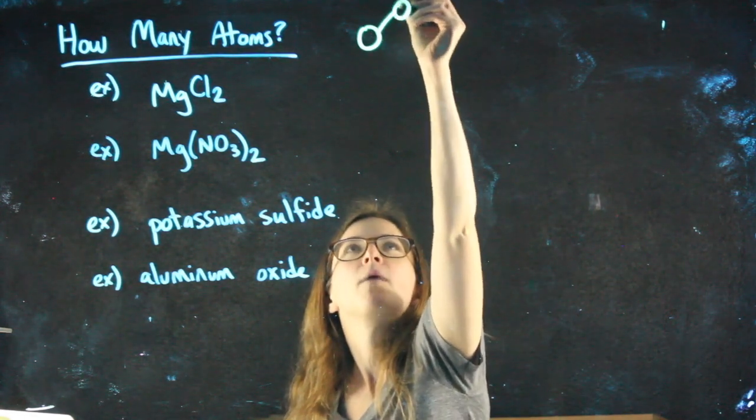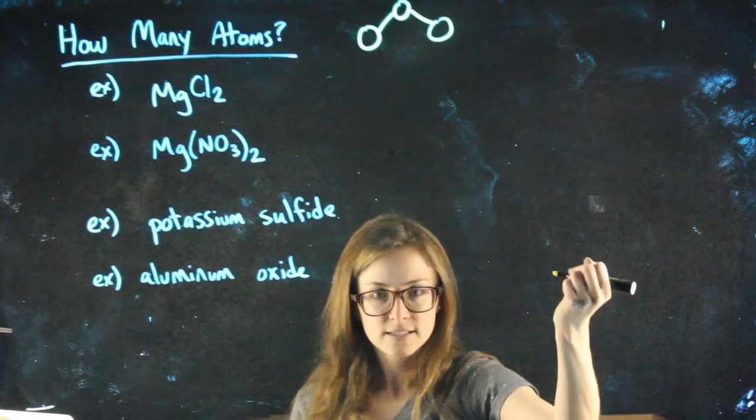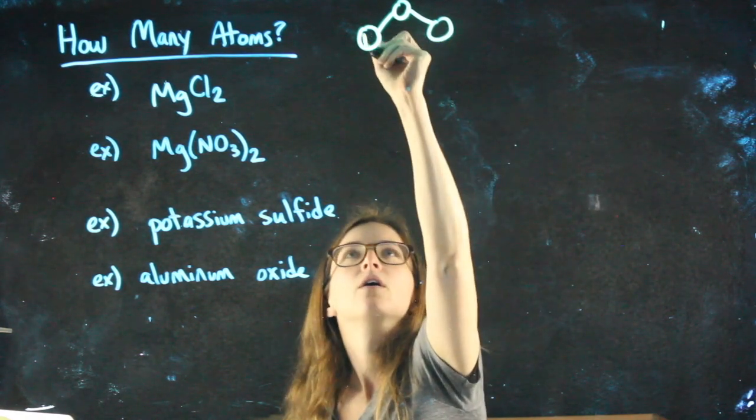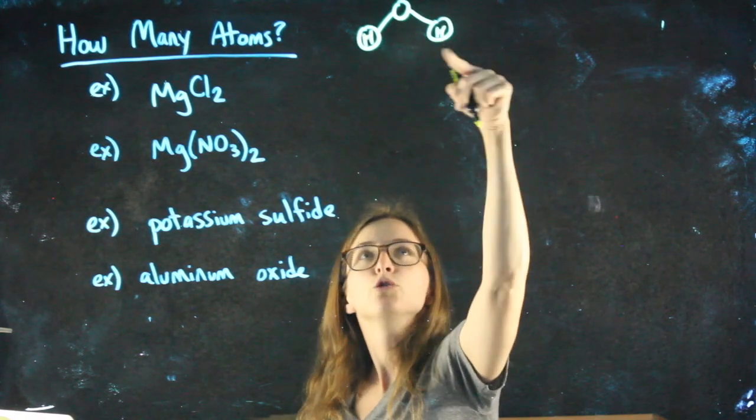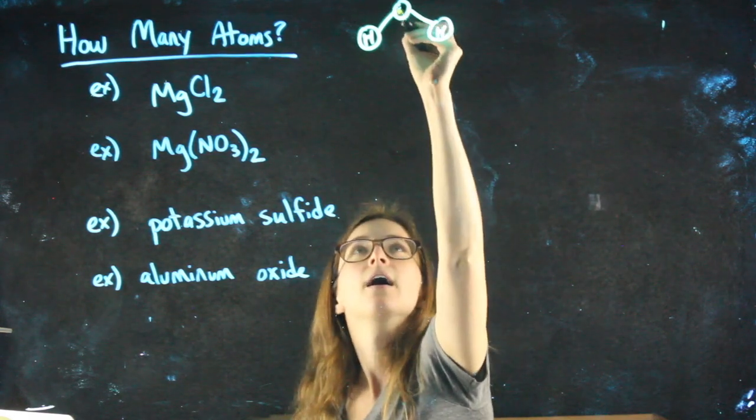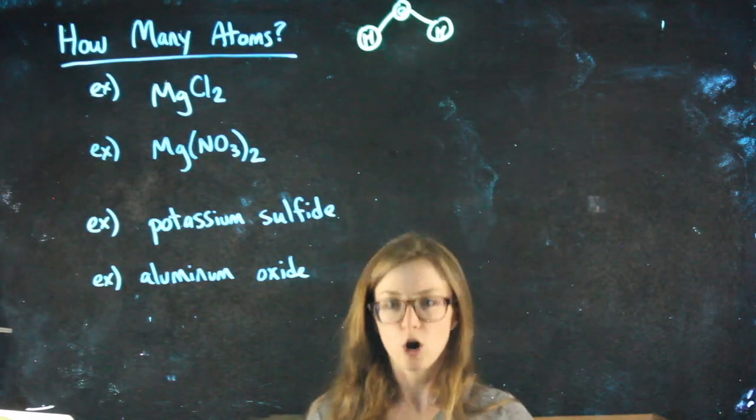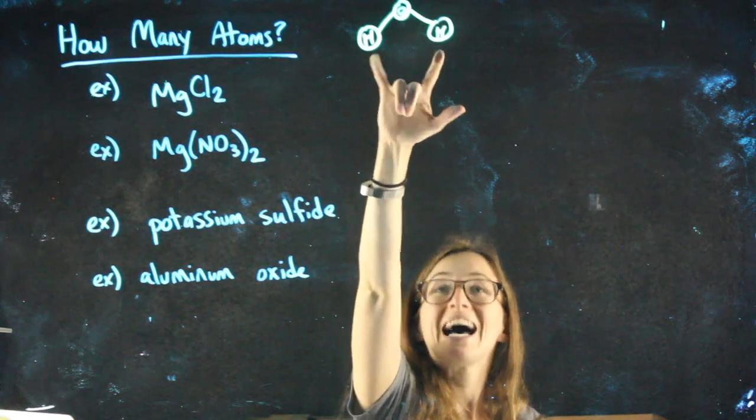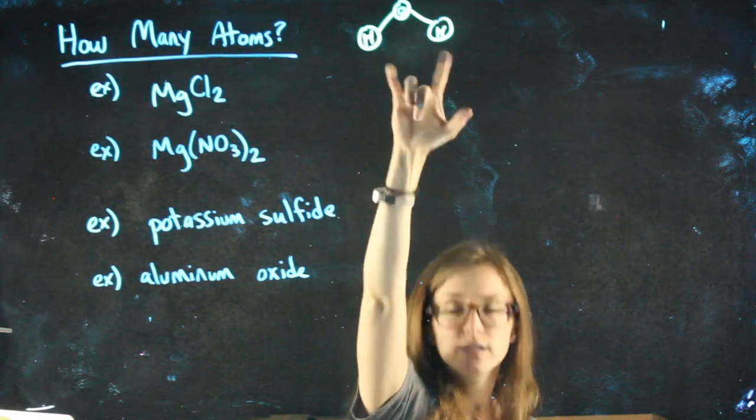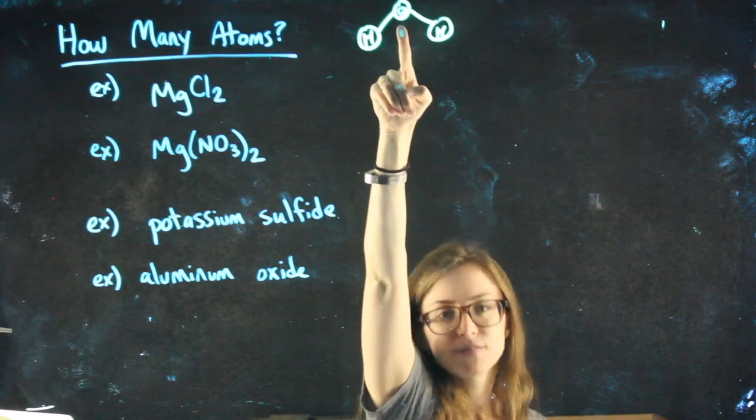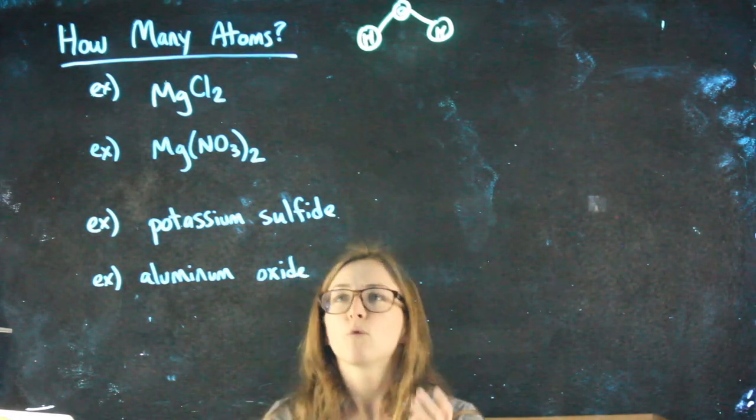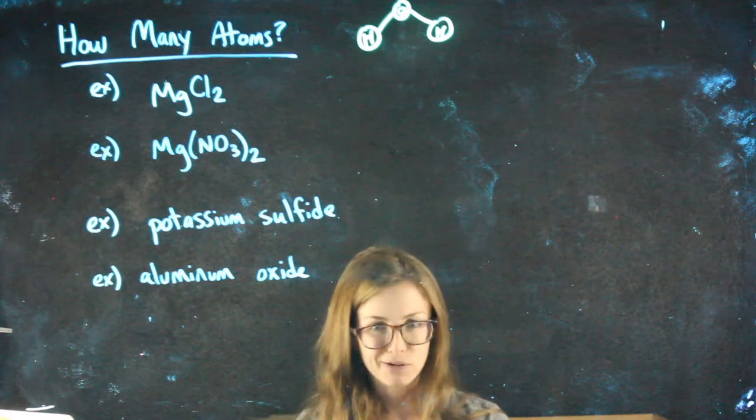but in pictures that you've seen of molecules drawn, right, if you've seen like a water molecule drawn like this, in a water molecule H2O, those are two hydrogen atoms connected to one oxygen atom. So H2O has two atoms of the element hydrogen and one atom of the element oxygen. That will matter for other things we're doing moving forward.